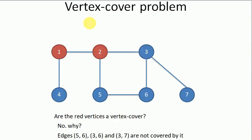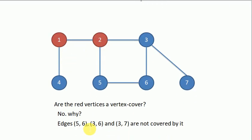Vertex cover. In the first step we choose vertices 1 and 2. We can see that it is covering 4 edges, but edges 5-6, 3-6, and 3-7 are not covered by it. So it is not a vertex cover problem, it is not the final vertex cover.